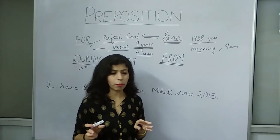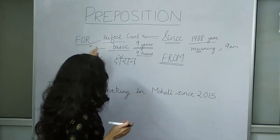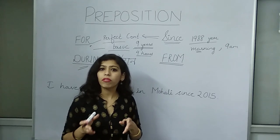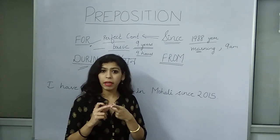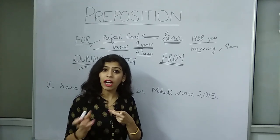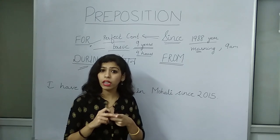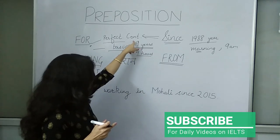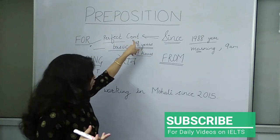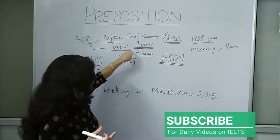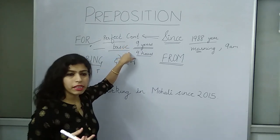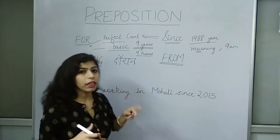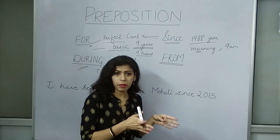To summarize: 'for' is used in perfect continuous tenses — past, present, and future — as well as in basic sentences. 'Since' is used only with perfect continuous tense. 'During' is used when referring to a specific period in which something happens.